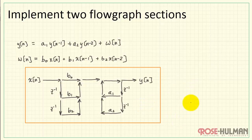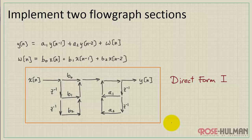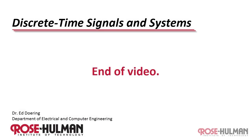This becomes the implementation that we call Direct Form 1. This is the most straightforward implementation of the difference equation as a flow graph.